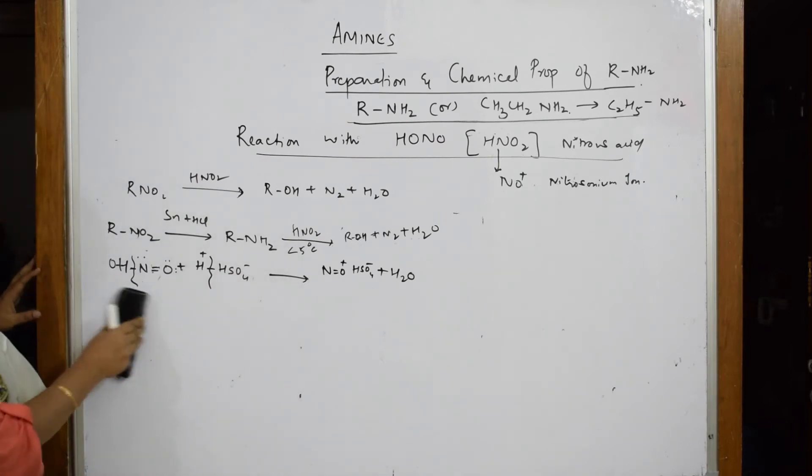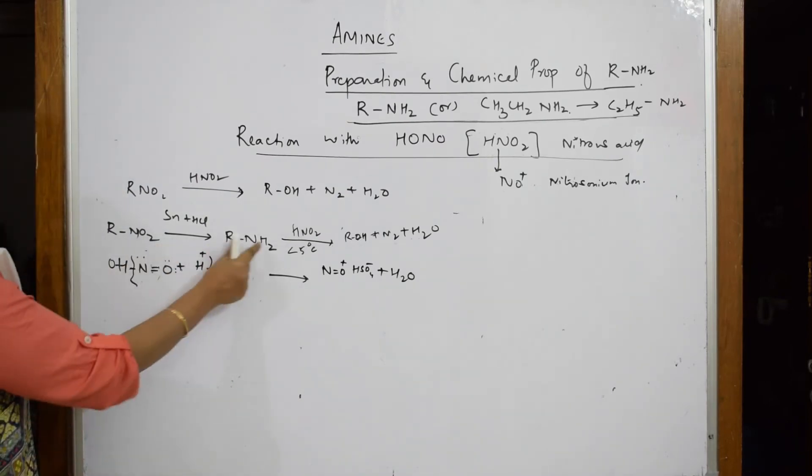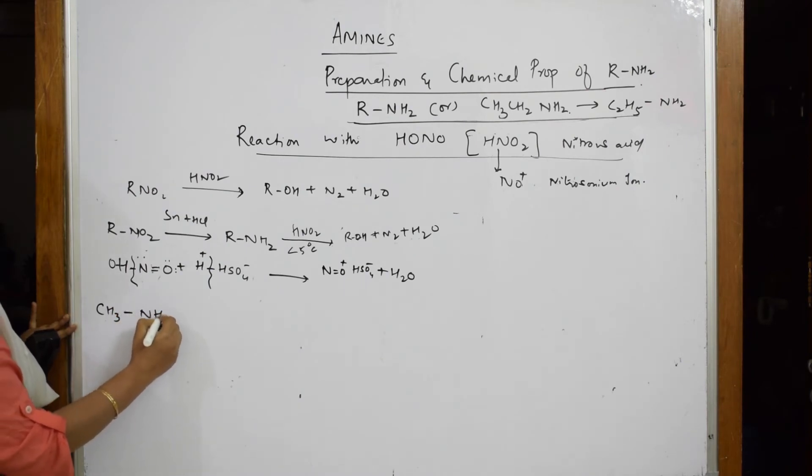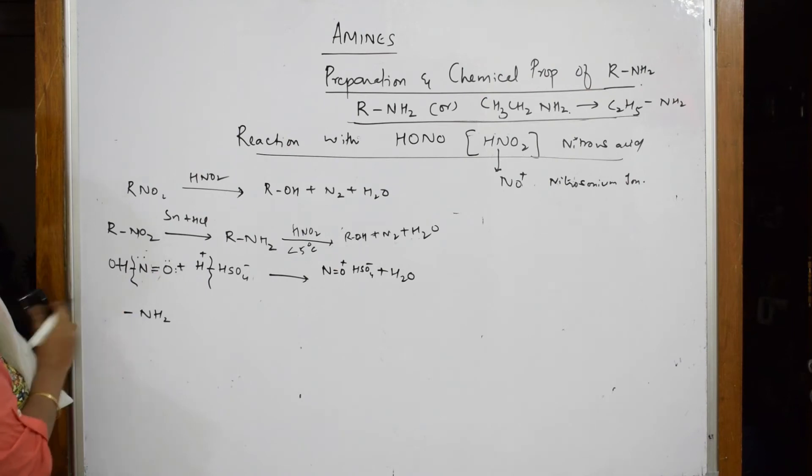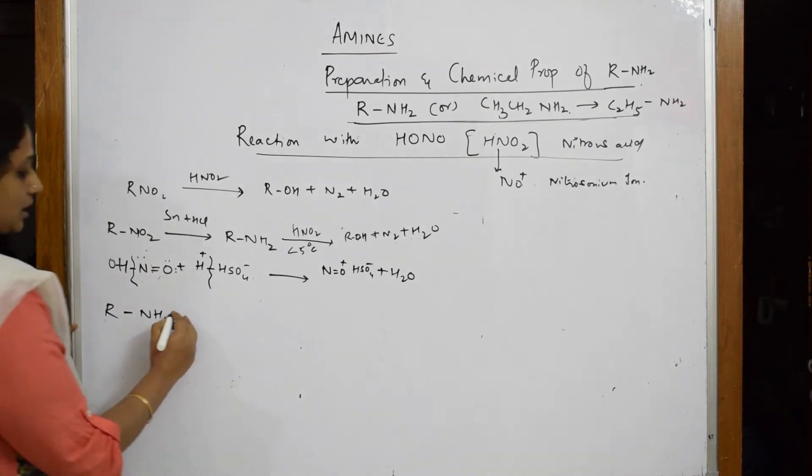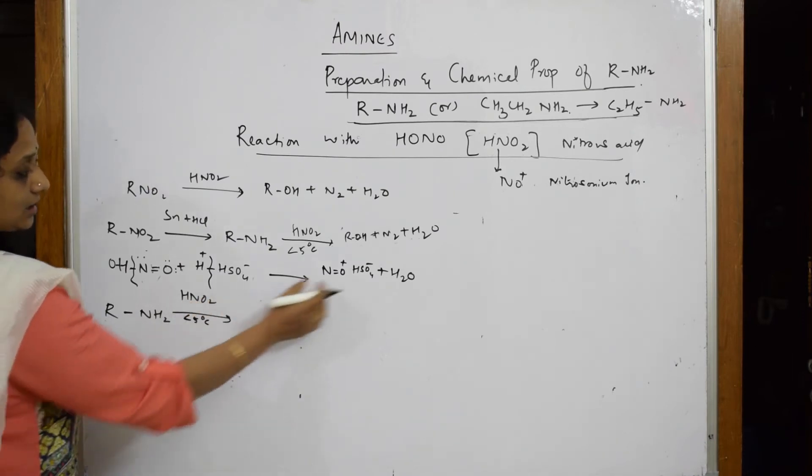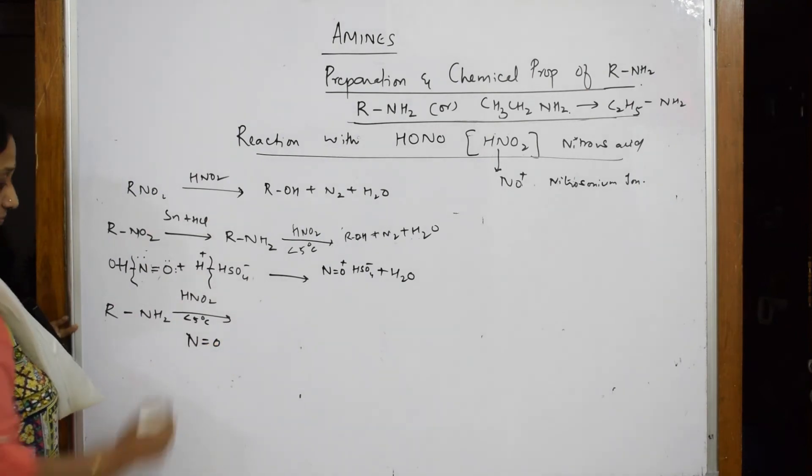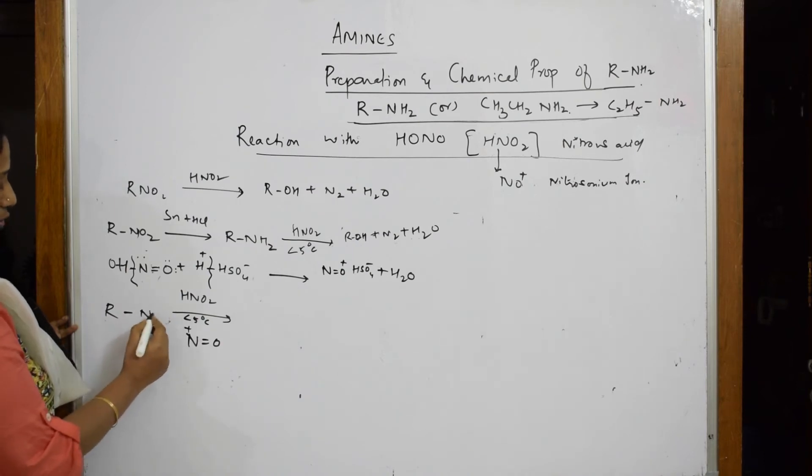What do I get? Suppose if I take CH3-NH2, you can take R also. If it is confusing, write R. Now this in the presence of HNO2 at less than 5 degrees, what cation does it have? It has nitrosonium cation, N+. Now we very well know nitrogen has a lone pair of electrons, isn't it?